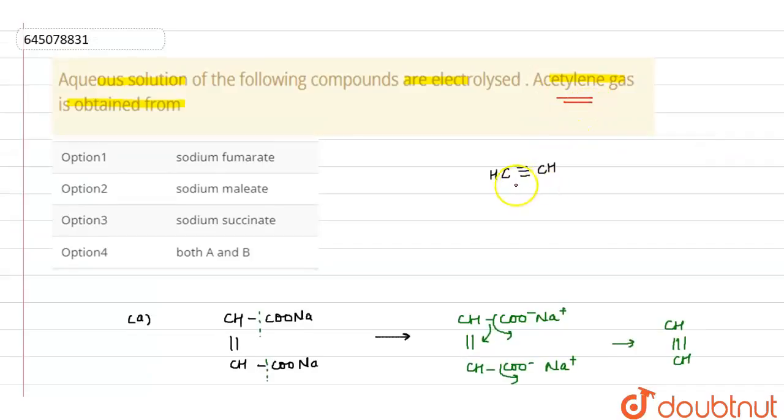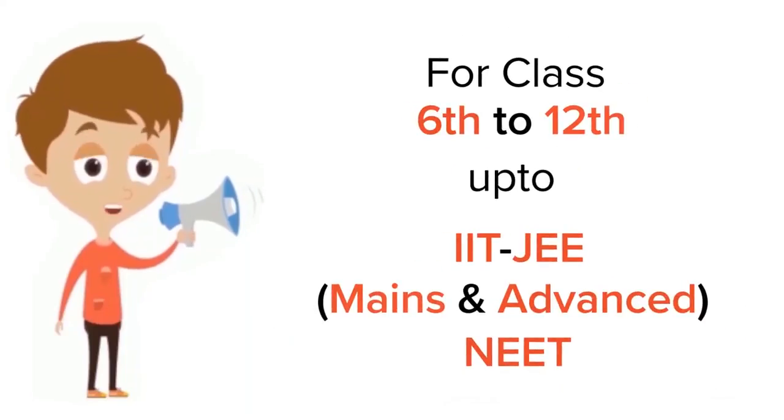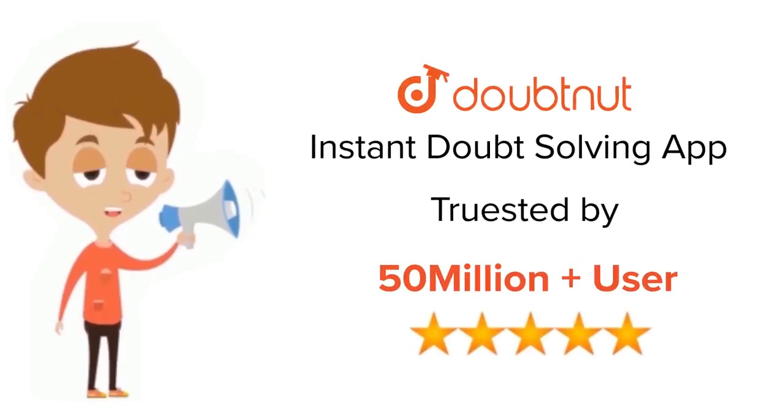That means, according to that, option number fourth is the correct answer. For Class 12th, IIT-JEE, and NEET level, trusted by more than 5 crore students, download Doubtnet app today.